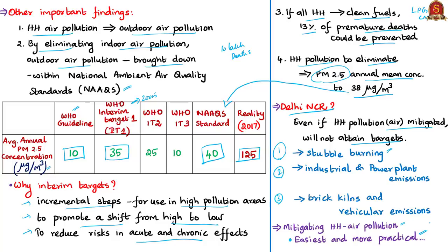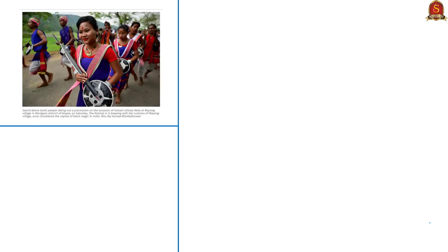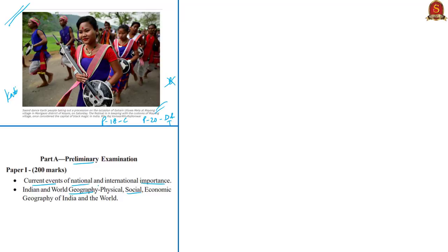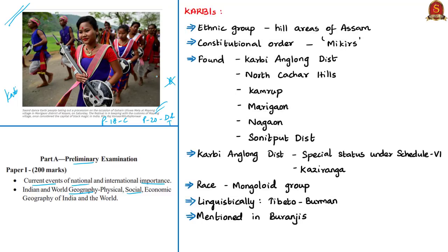The third topic of the day is the Kharbi tribe, based on a picture appearing in page 18 of the Chennai edition and page 20 of Delhi and Thiruvananthapuram editions; it does not appear in the Bengaluru edition. This will be helpful in prelims preparation under current events and social geography. The picture shows Kharbi people taking out a procession in a festival celebrated in Morigaon district of Assam.